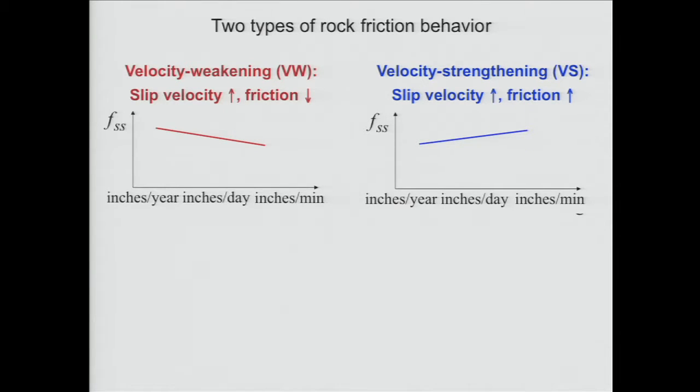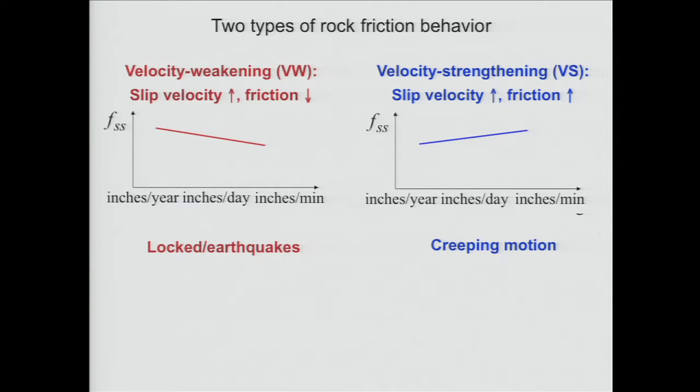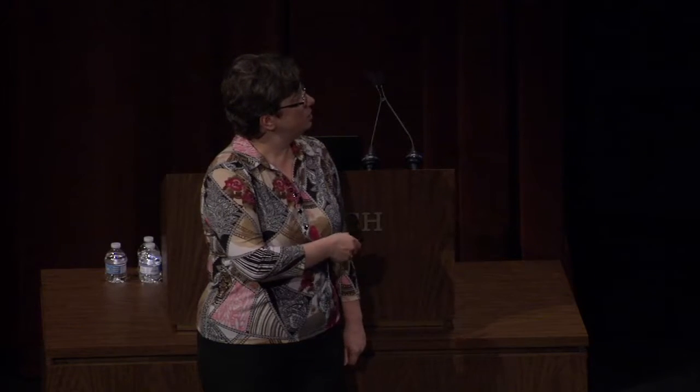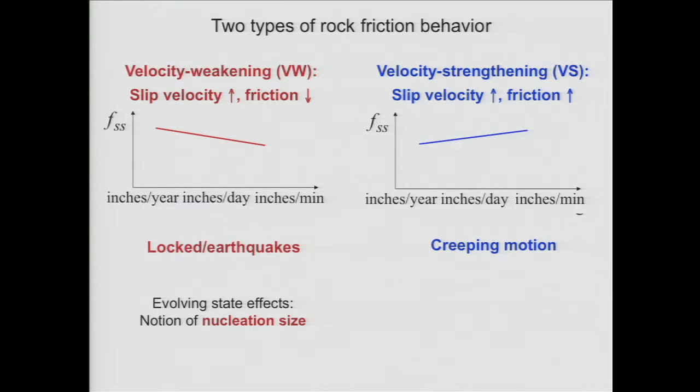Some other kinds of rock have velocity strengthening behavior — the opposite. As slip velocity goes up, friction actually increases. And as we've seen from the spring-slider systems, friction weakening with motion leads to long periods of locking and then earthquakes due to acceleration. Velocity strengthening leads to creeping motion. The evolving state effects also give us the notion of nucleation size — when an earthquake initiates, it doesn't immediately run away, but there is a small period when it slips very slowly in a small area. After that, it accelerates and runs away. This small area is called the nucleation size.